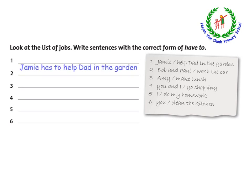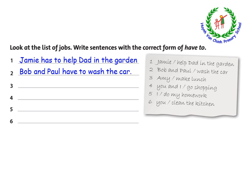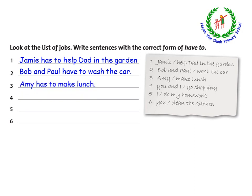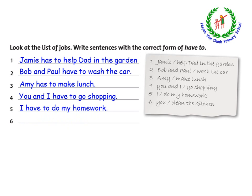Let's have a correction with me. Number 1: Jamie has to help Dad in the garden. Number 2: Bob and Paul have to wash the car. Number 3: Amy has to make lunch. Number 4: You and I have to go shopping. Number 5: I have to do my homework. Number 6: You have to clean the kitchen.